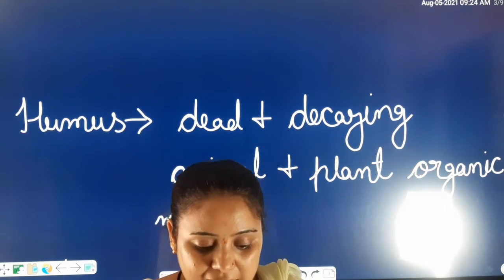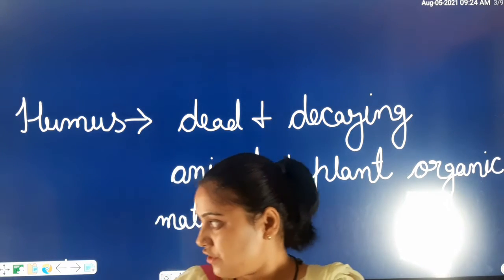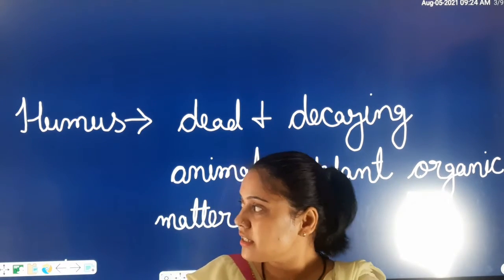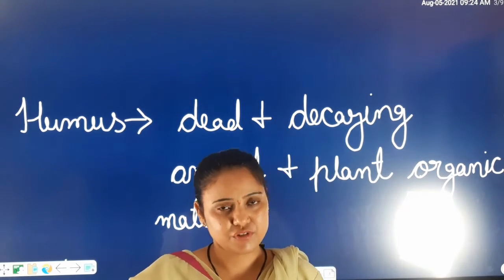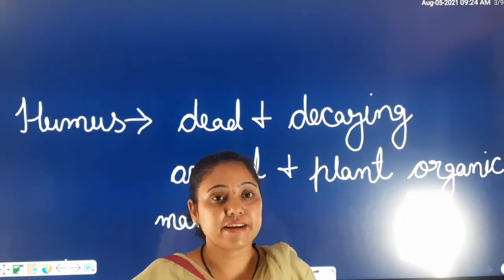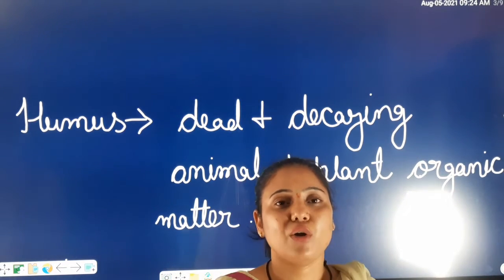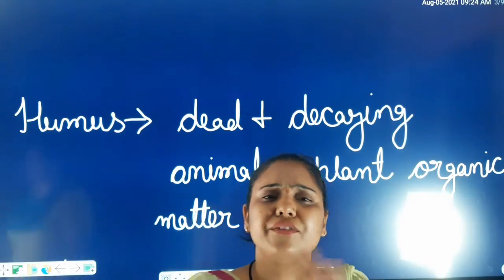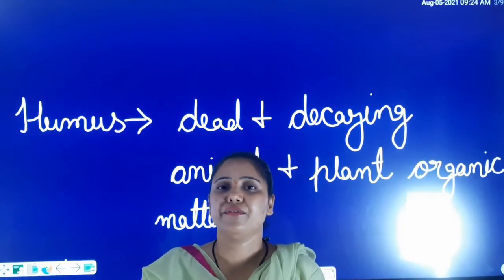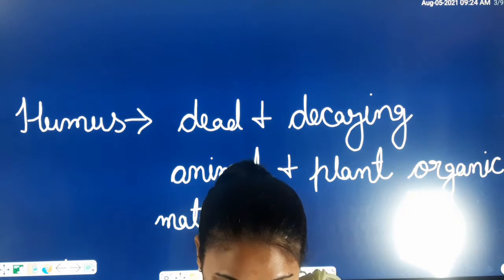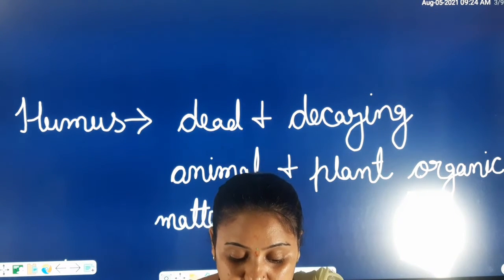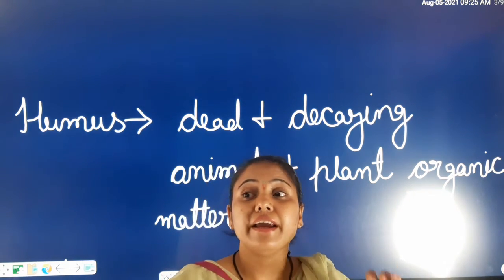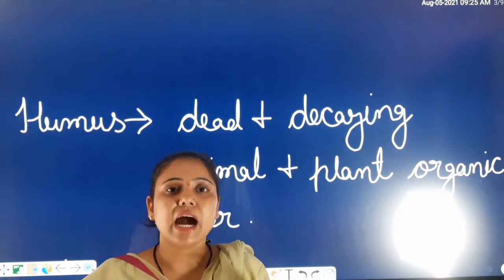Soil has different characteristics in different parts of the earth. Soil can be found in different types. This is one of the reasons why some areas specialize in growing only one kind of crop. This is the reason that in every place you have different types of crops.